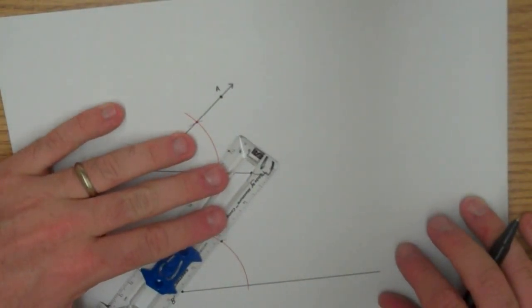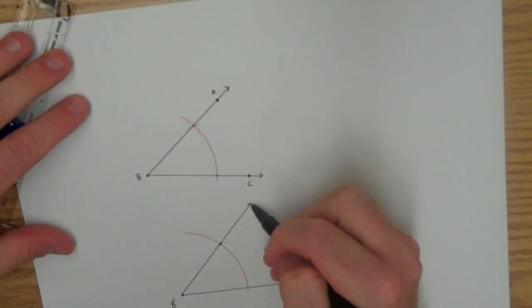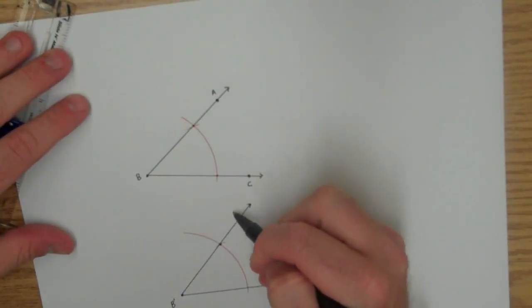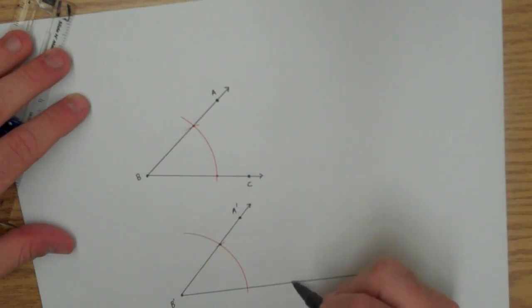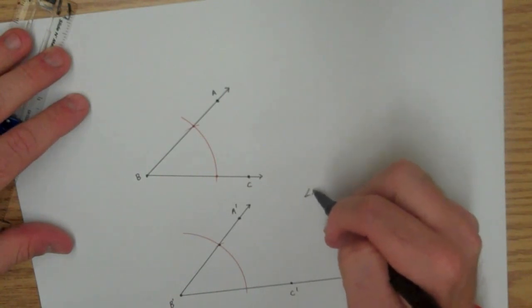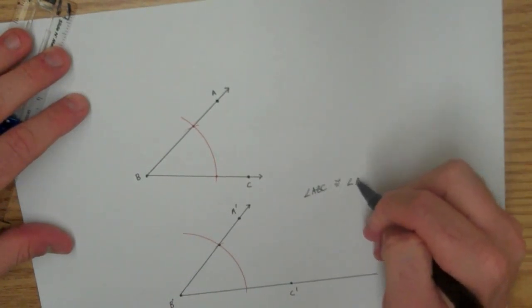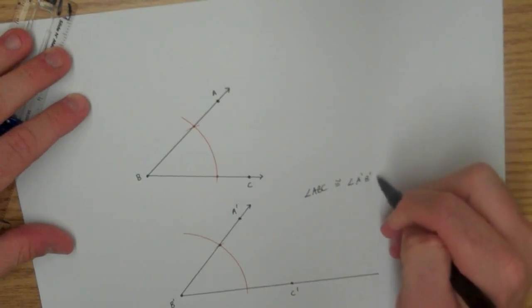So all I need to do is connect these two points. We'll call this A prime, we'll call this C prime. And now I know that angle ABC is congruent to angle A prime, B prime, C prime.